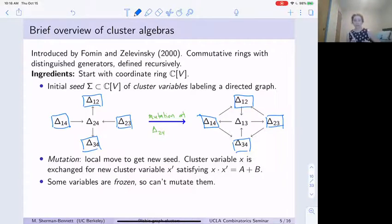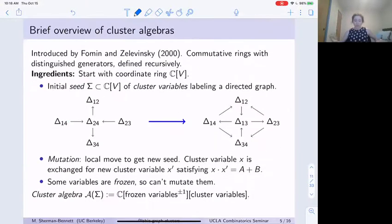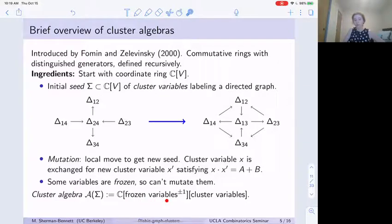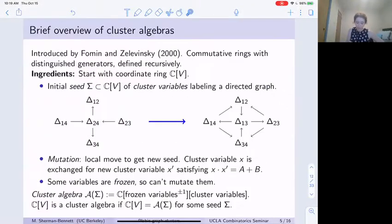You start with the initial seed, perform mutation at some vertex to get a new seed, and keep performing mutations, getting tons of seeds filled with cluster variables. You use these to define the cluster algebra A_σ, generated by your initial seed σ — the polynomial ring in cluster variables where coefficients are allowed to be Laurent polynomials in frozens. Frozens play a special role as units. What it means for a coordinate ring to be a cluster algebra is that it equals A_σ for some seed σ chosen in this way.